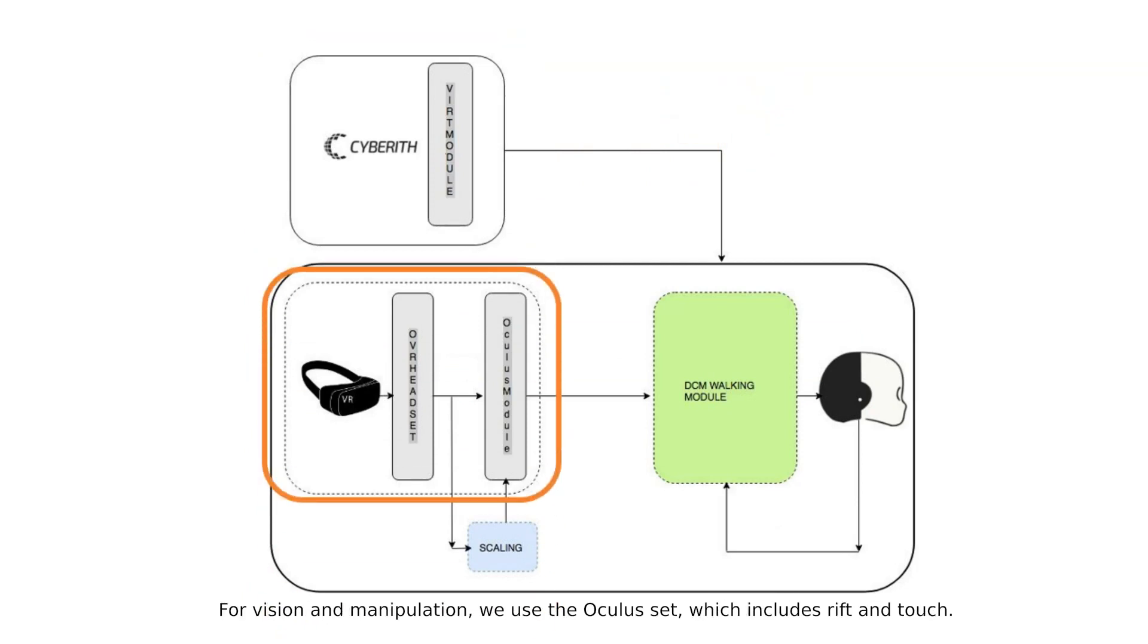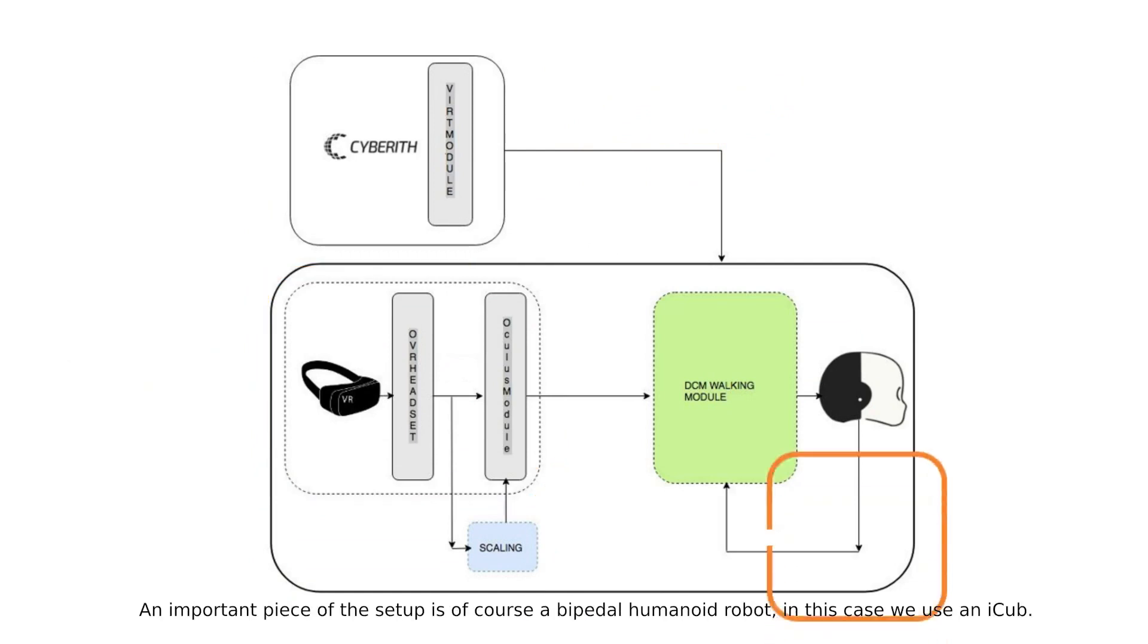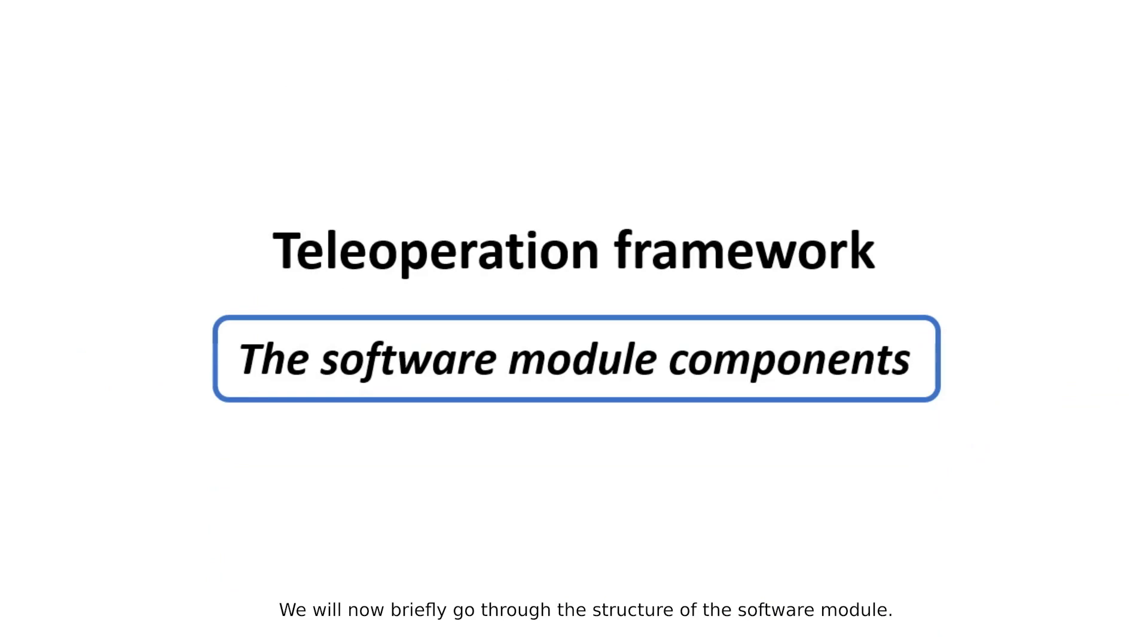For vision and manipulation, we use Oculus Set, which includes Rift and Touch. An important piece of the setup is, of course, a bipedal humanoid robot. In this case, we use an iCub. We will now briefly go through the structure of the software modules.